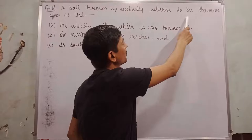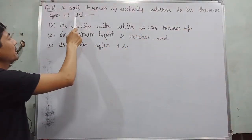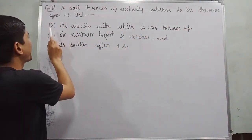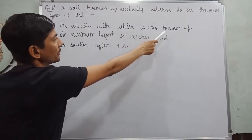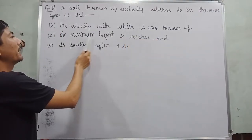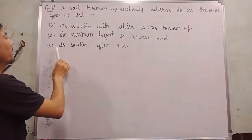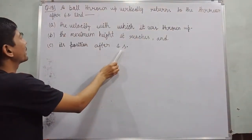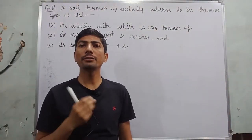up vertically returns to the thrower after six seconds. Find: (a) the velocity with which it was thrown up, (b) the maximum height it reaches, and (c) its position after four seconds. There are three things we need to find out